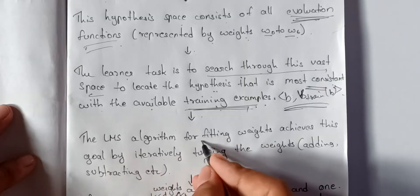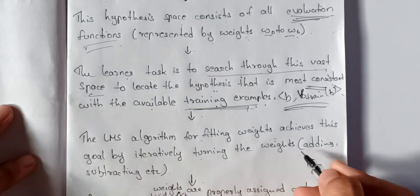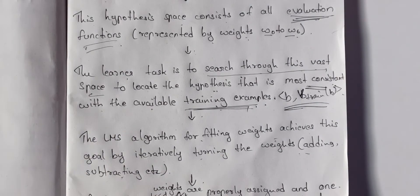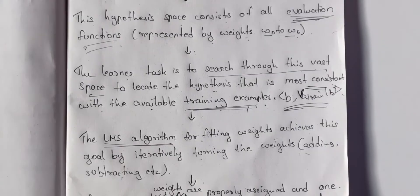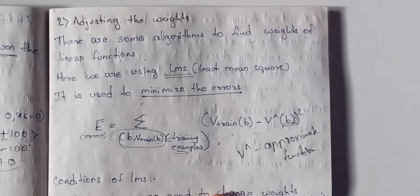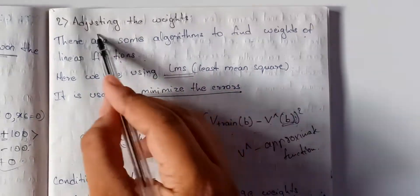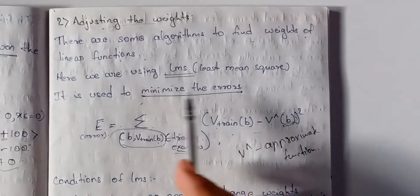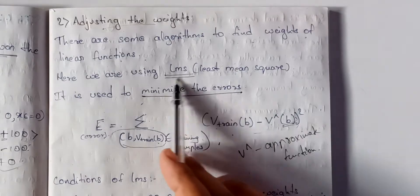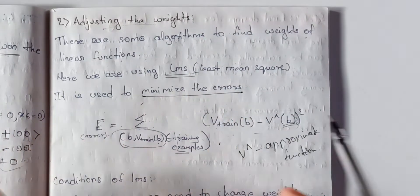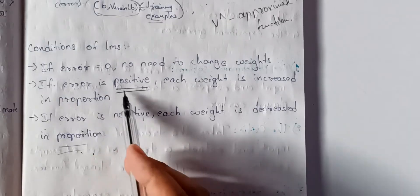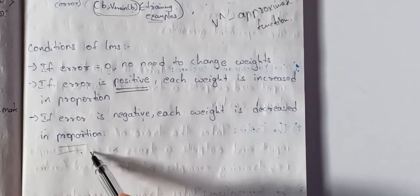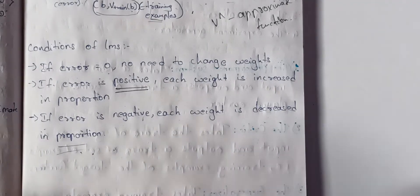The LMS algorithm for fitting weights achieves this goal by iteratively tuning the weights — adding or subtracting. Using the LMS algorithm for fitting weights: if the error is positive, each weight is increased in proportion; if the error is negative, each weight is decreased in proportion. This is designing the learning system step 4 — choosing the function approximation and adjusting the weights.